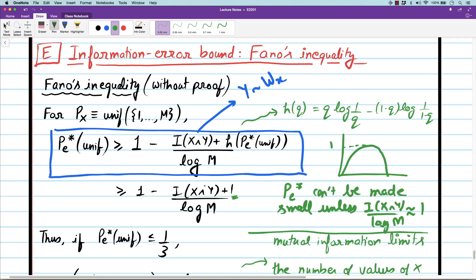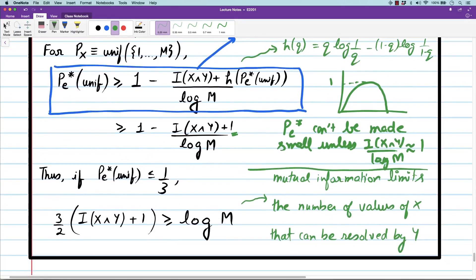Once again, the inequality is very simple to state. Probability of error is at least 1 minus mutual information plus 1 by log of number of hypotheses.